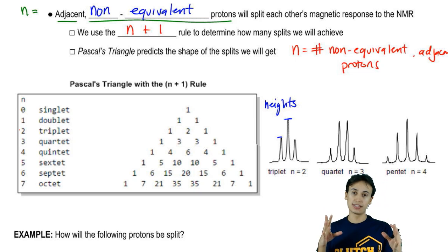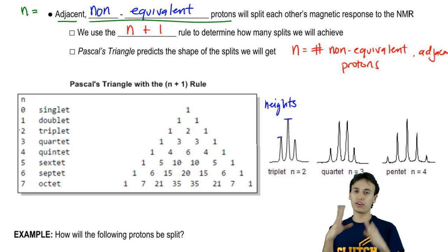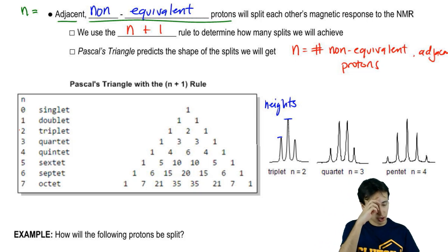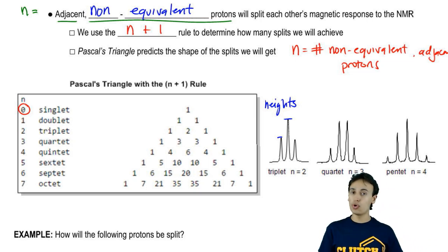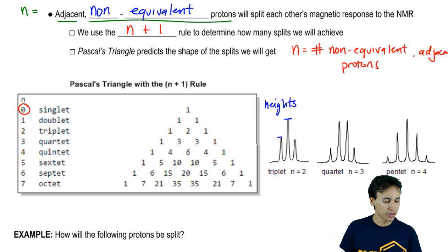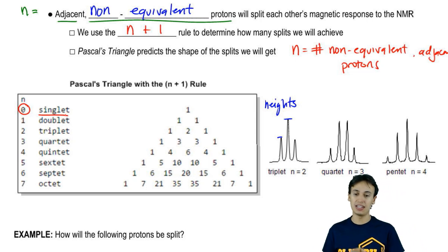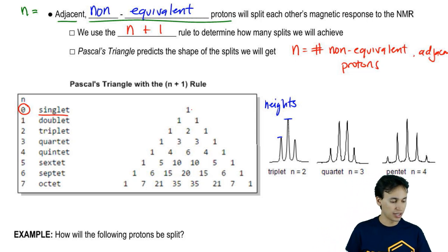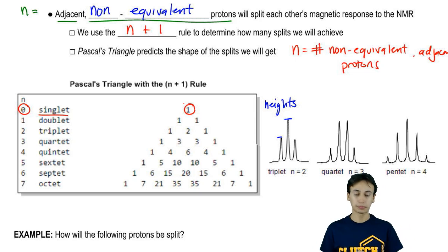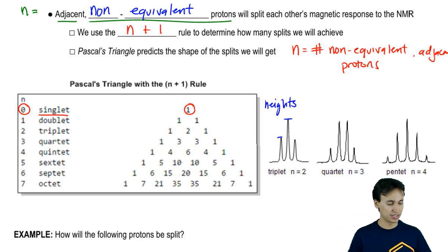As n gets bigger, you're going to get more splits that have varying complexities. So for example, if you do n plus 1 and your n is actually equal to 0, basically meaning that you don't have any protons around that are splitting, then what we're going to call that is a singlet, and you're just going to get one peak.